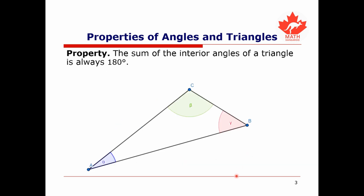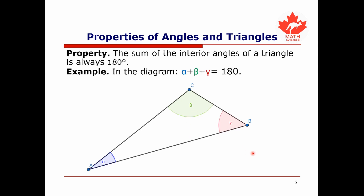A second useful property is that the sum of the interior angles of a triangle is always 180 degrees. Here I have a triangle with vertices labeled A, B, and C, and angles labeled alpha, beta, and gamma. This property tells us that alpha plus beta plus gamma is equal to 180 degrees.